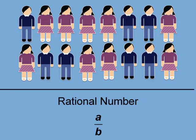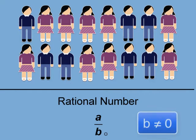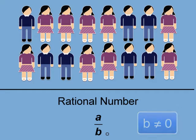A rational number is the ratio of two integers a and b, where b is not zero. The simple reason that b can't be zero is that division by zero is undefined. As written, a rational number looks like a fraction or a ratio.